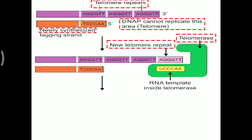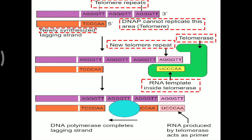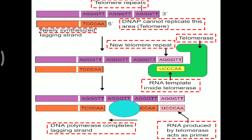Telomerase enzyme is needed. This enzyme produces an RNA template inside the telomerase. This RNA template is then helpful — it acts as a primer. Over that primer, DNA polymerase completes the lagging strand formation. Finally, the unreplicated sequence at the telomere end of the parent strand is fully replicated. But for all this activity, telomerase enzyme is needed.